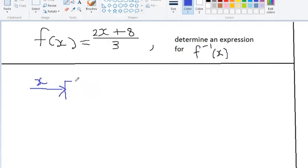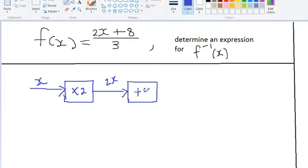And x is going through several processes here. The first thing that is done is x is multiplied by 2. So the first processor will have x being multiplied by 2. That results in 2x coming out because x times 2 is 2x. Afterwards we add 8, so the second processor box will have plus 8 in it, so that will give us 2x plus 8.